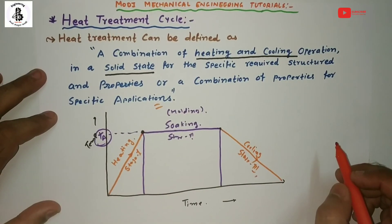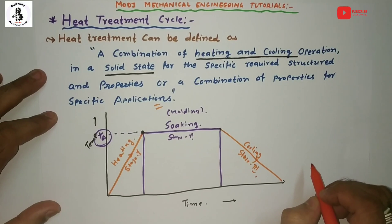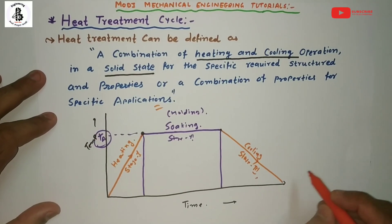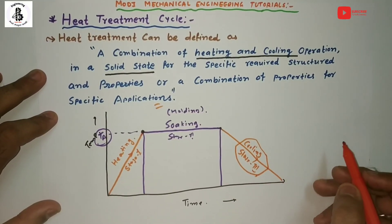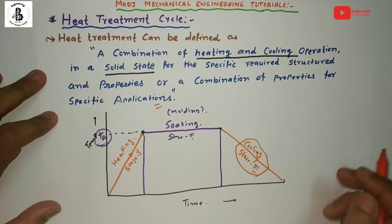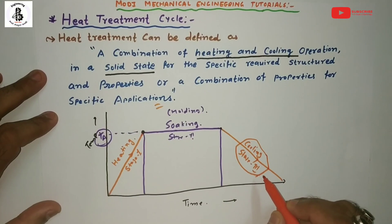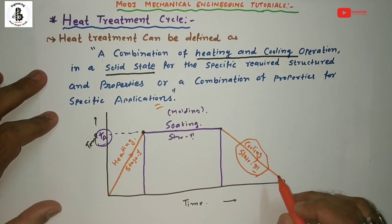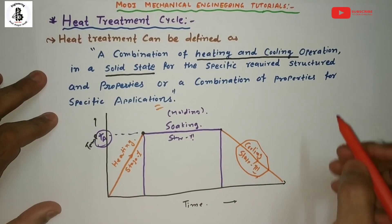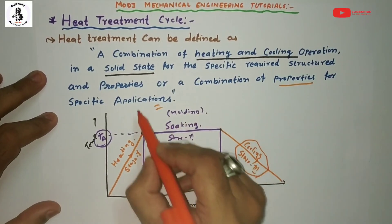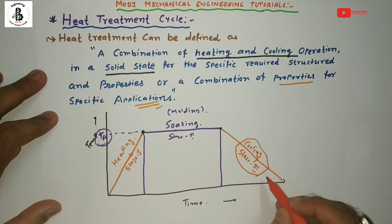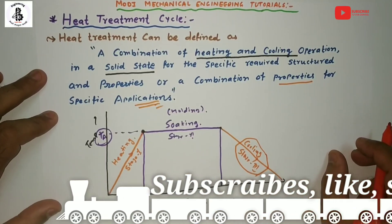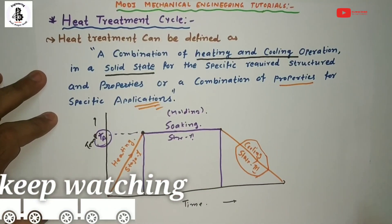If you want to increase or enhance the mechanical properties of a steel structure, you should follow this basic process of heating, holding, and cooling. With different cooling rates you will get different mechanical properties, because controlling the cooling rate changes the microstructure of the material, and when the structure changes, the properties also change. As per the requirements for a specific application, you select the appropriate cooling rate. I hope you understand the basic heat treatment cycle. If you like this, please subscribe and share more mechanical engineering tutorials. Thank you so much and keep watching.